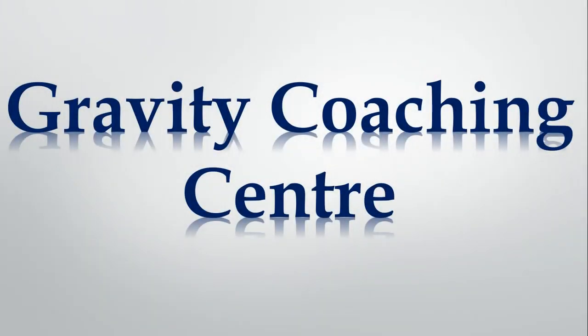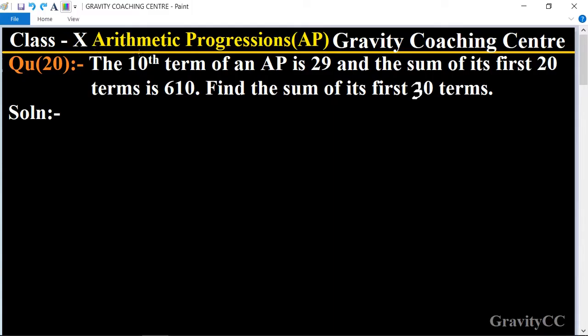Welcome to our channel Gravity Coaching Centre. Class 10, chapter Arithmetic Progressions, question number 20. The 10th term of an AP is 29 and the sum of its first 20 terms is 610. Find the sum of its first 30 terms.